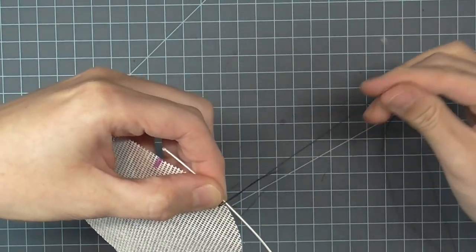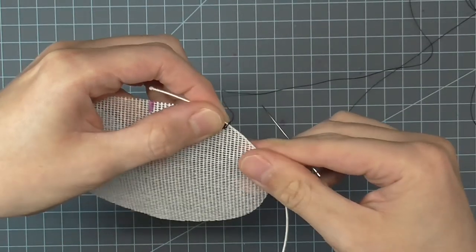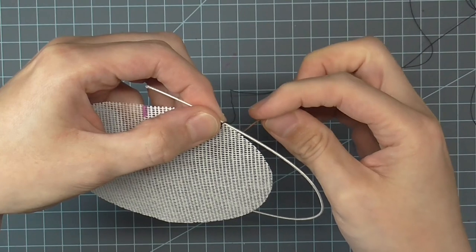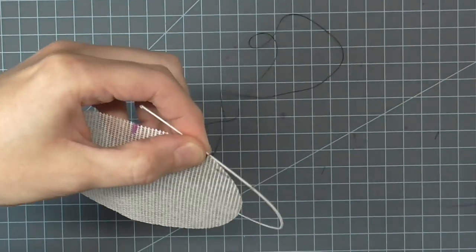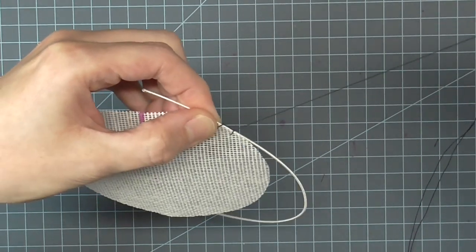If possible and the shape permits, try to keep the wire ends joined together on the flattest side of the shape. This helps the joiner relax against the shape better. Continue your buttonhole stitch around the shape.